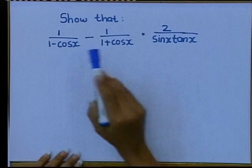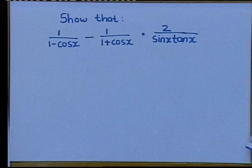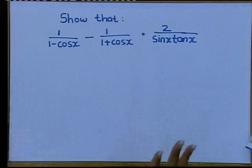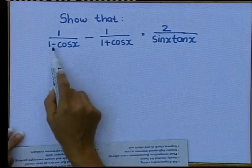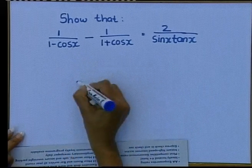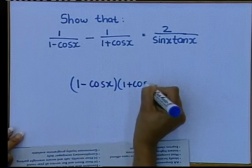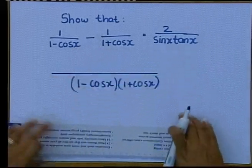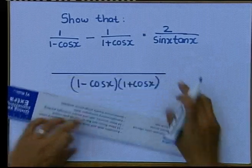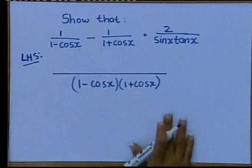Let's go to our sum again: 1 over 1 minus cos x, minus 1 over 1 plus cos x, equal to 2 over sin x tan x. I hope by now you have something. What is your LCD? It's 1 minus cos x, multiplied by 1 plus cos x. That is your LCD. The LCD is everything at the bottom. Can I drop this LCD? No ways — I'm working on the left-hand side.